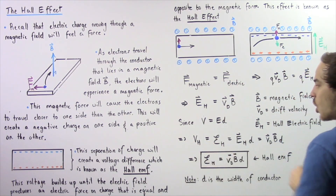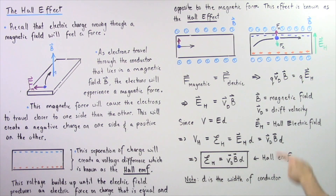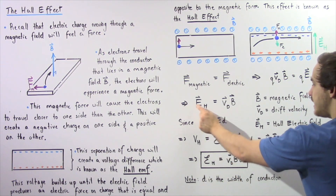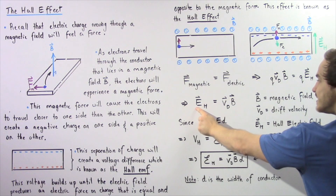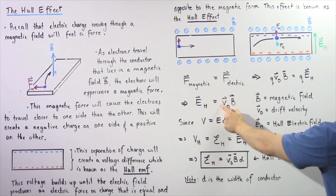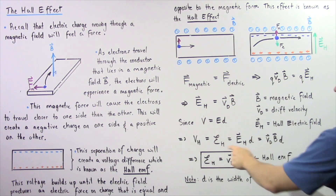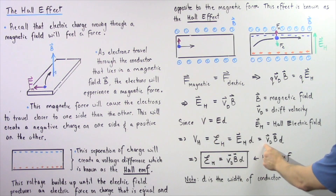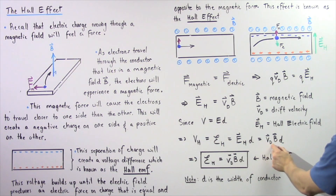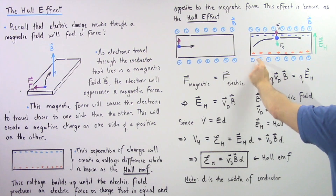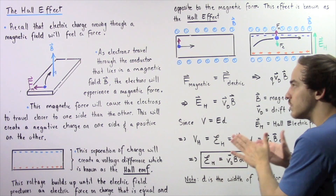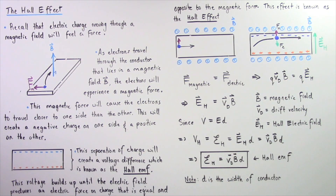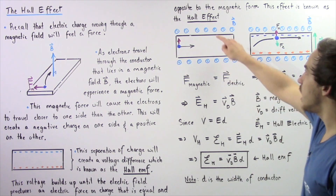Using these results, we can calculate the Hall voltage. The Hall voltage, also known as the Hall EMF, is equal to the electric field E_H multiplied by the distance D. Since E_H equals the drift velocity V_D multiplied by the magnetic field B, the Hall EMF equals V_D times B times D — the drift velocity multiplied by the magnetic field multiplied by the width of the plate. This is our equation for the voltage difference produced as a result of the Hall effect.